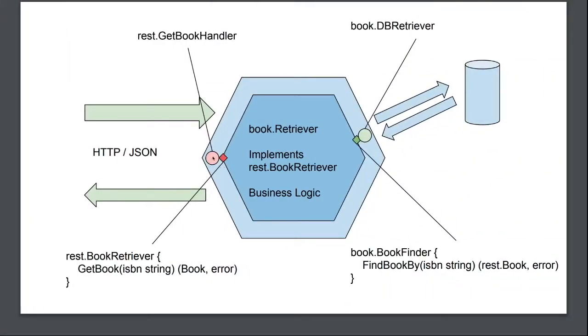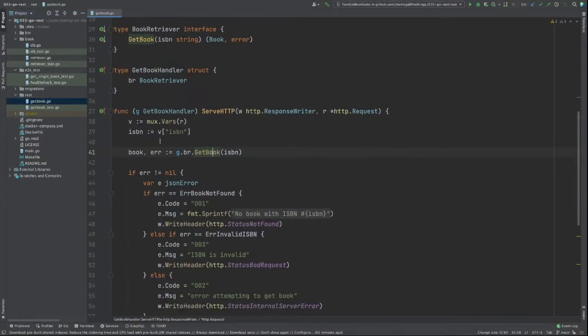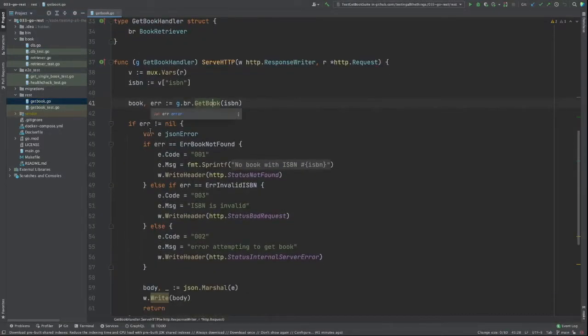Over here on the left, the first red dot represents our HTTP REST handler. This red dot here is known as the primary adapter. It is the piece of code that starts your application doing something. In this case, it's the piece of code that starts us in the journey of retrieving a book. If we go and look at the code now, our handler has one function, serve HTTP.